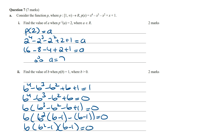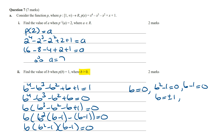Using the null factor law, b equals 0, or b squared minus 1 equals 0, or b minus 1 equals 0. Since b must be larger than 0, b cannot equal 0. From b squared minus 1 equals 0 we get b equals plus or minus 1, and from b minus 1 equals 0 we get b equals 1. Therefore, since b is larger than 0, b can only equal 1.